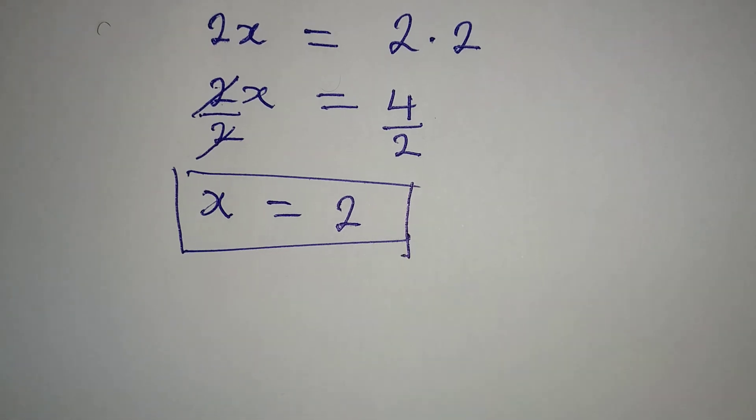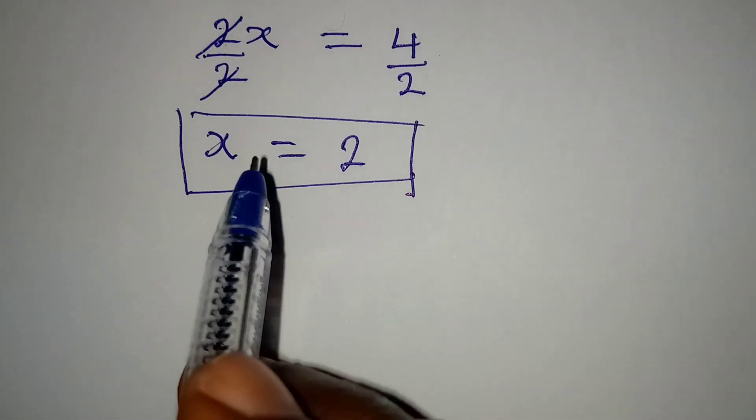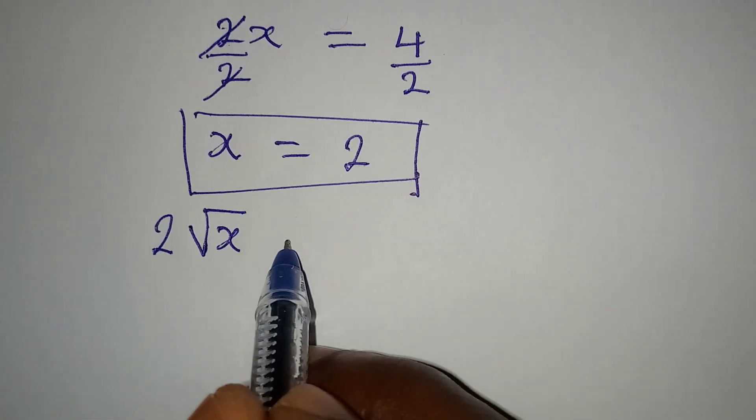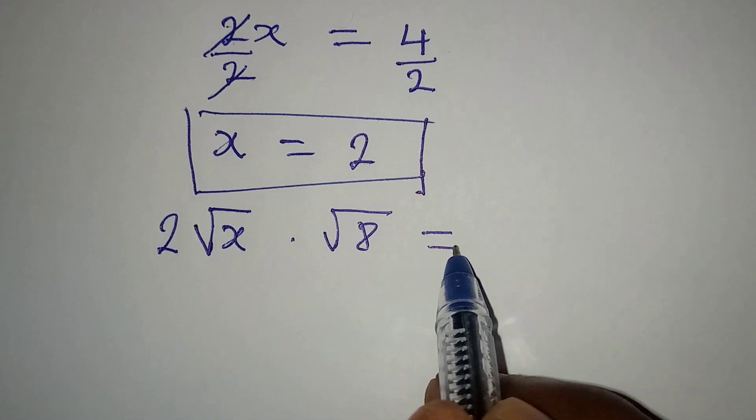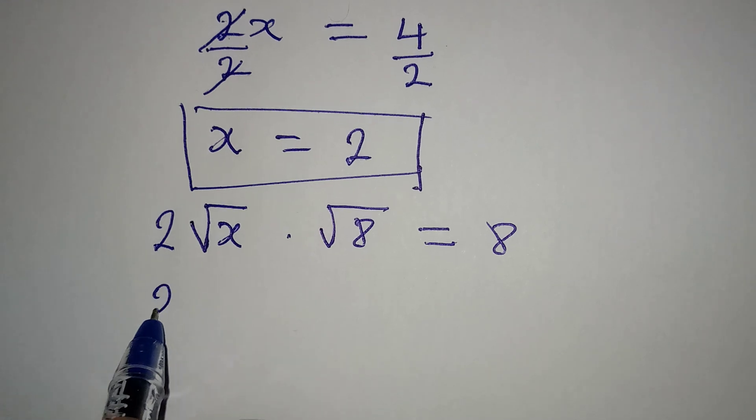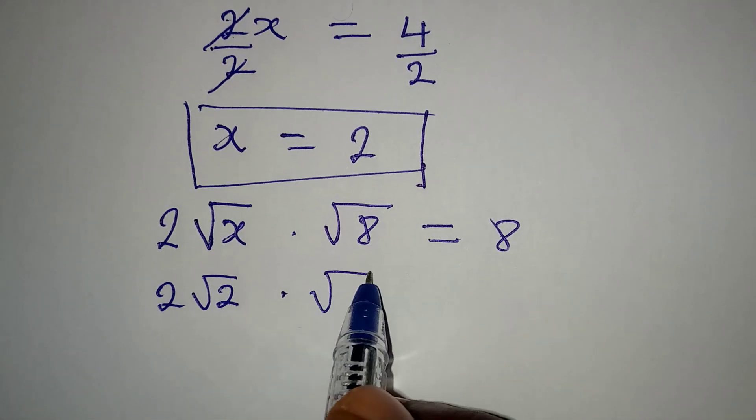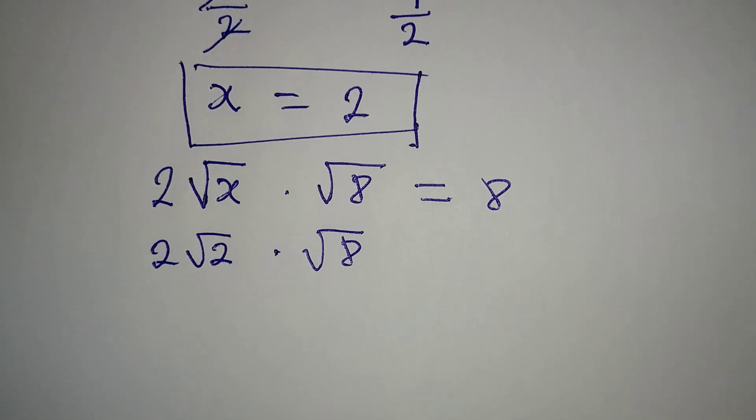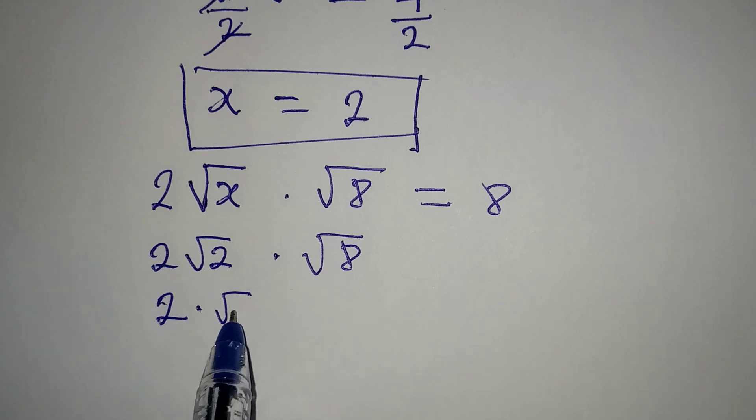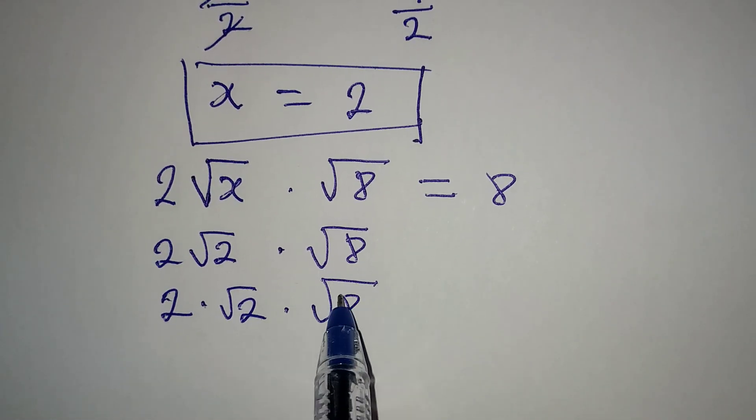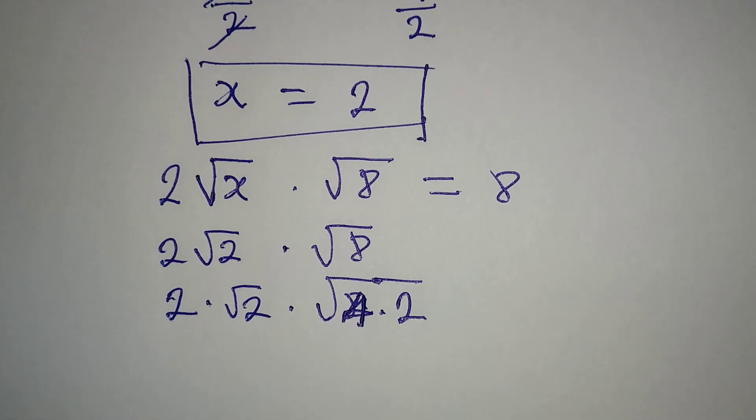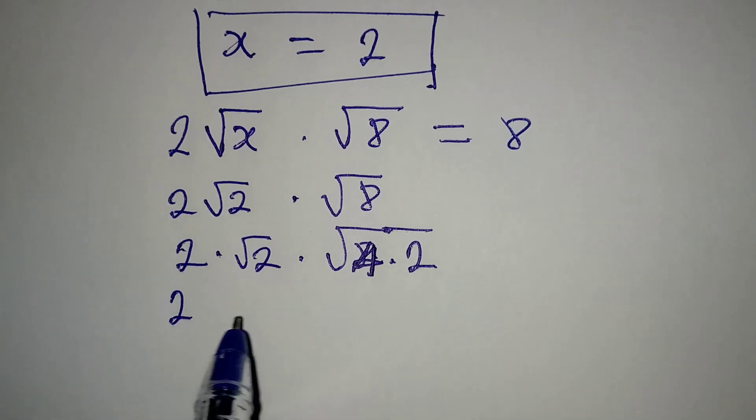But to clear our doubt, let's go back to the original equation: 2√x multiplied by √8 equal to 8. If I put 2 in here, then I have 2√2 multiply by √8. Let's break this down - 2√2 multiplied by √8. 8 is 4 times 2, right?